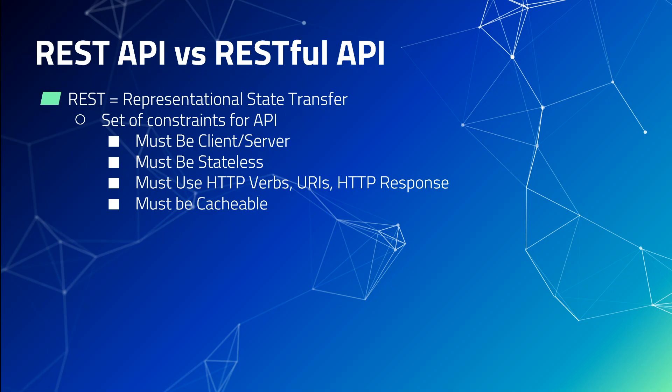The fourth constraint the API should follow is caching. The client needs to be able to cache representations, which is possible because of statelessness in a RESTful API. Every representation should be self-descriptive so that the client doesn't have to go back to the server again and again.